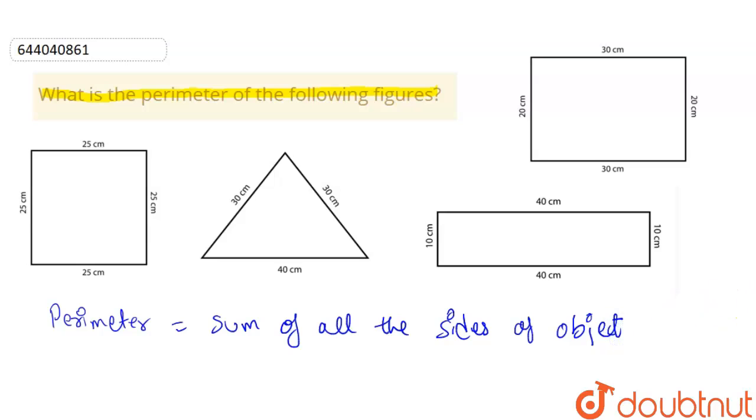So if we sum up all the sides of an object, we get its perimeter. So let us suppose this is figure 1, this is figure 2, this is figure 3, and this is figure 4.